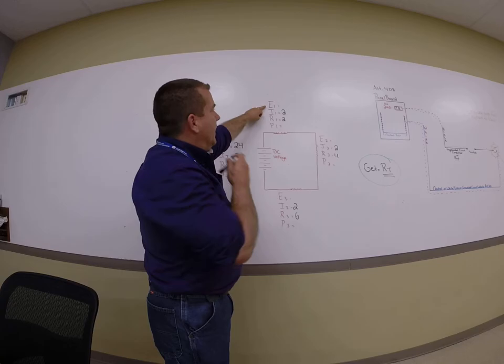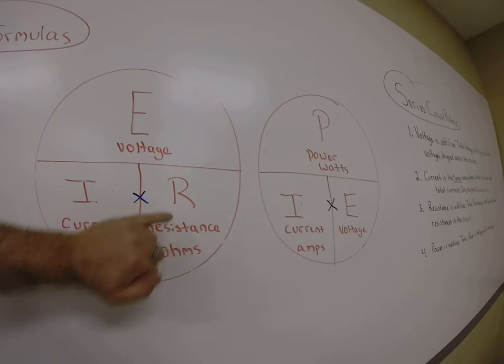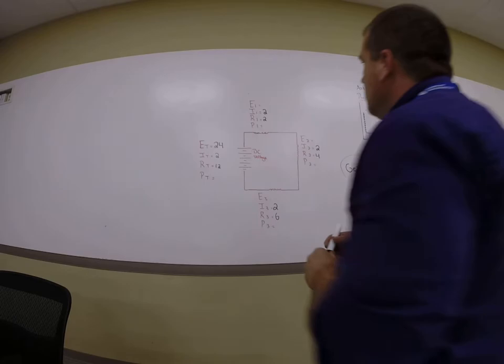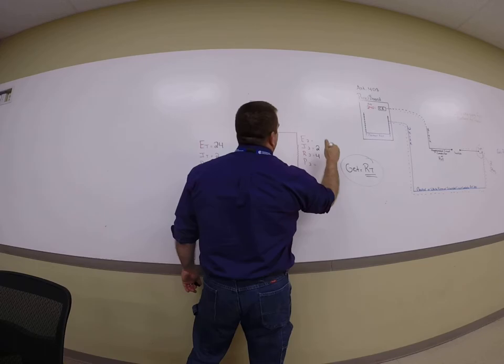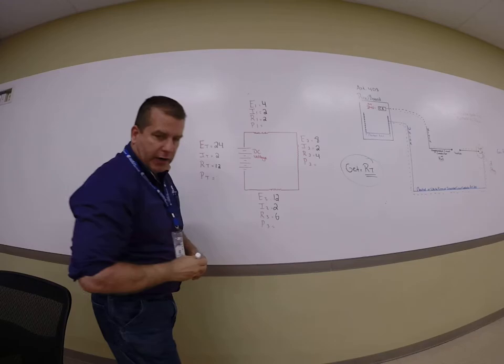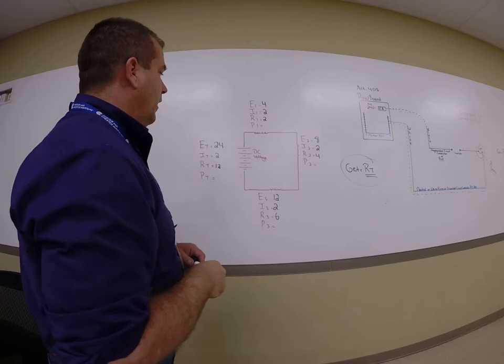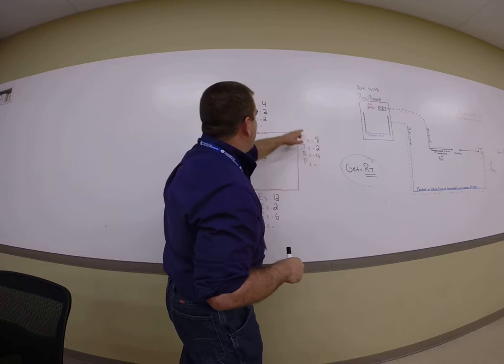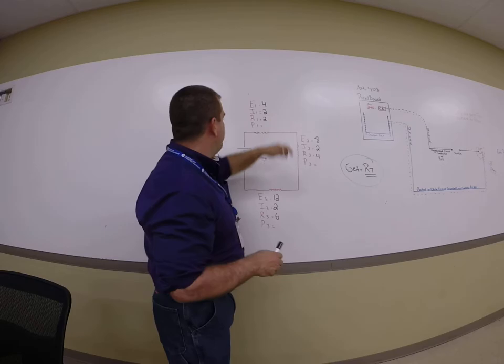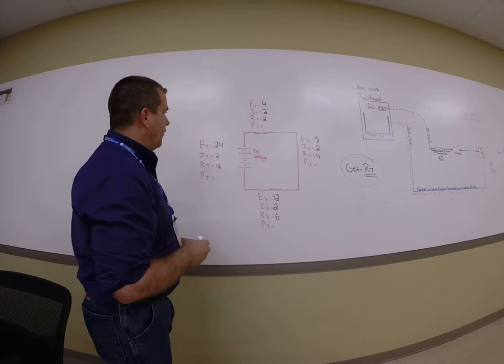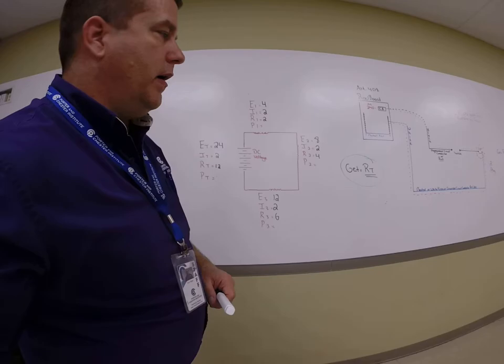How do I find E if I have I and R? To find voltage if I have current and resistance, I cover up the E — it's I times R. So: 2 times 2 is 4, 2 times 4 is 8, 2 times 6 is 12. How do I confirm that I'm right? One of the rules of the series circuit is voltage is additive. If I add up all the voltage drops across the resistors, they should equal the total: 12 plus 8 equals 20, 20 plus 4 equals 24. That confirms I'm correct because my voltage does indeed equal the total.